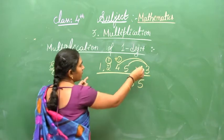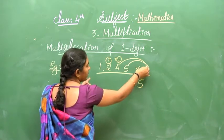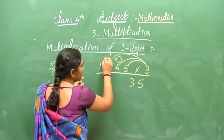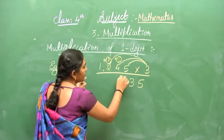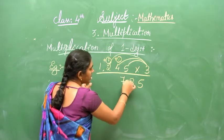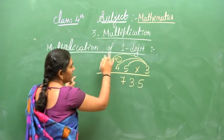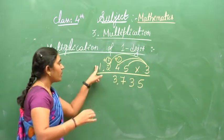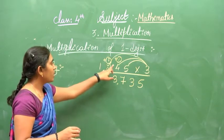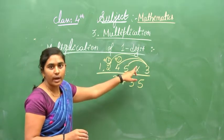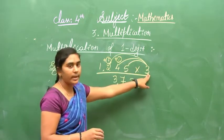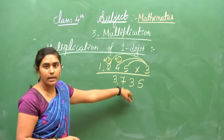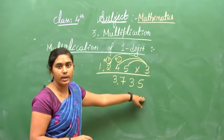Then 3 times 2 is 6, plus 1 carry is 7 — write 7. Then 3 times 1 is 3 — write 3. So 1,245 multiplied by 3 gives 3,735.